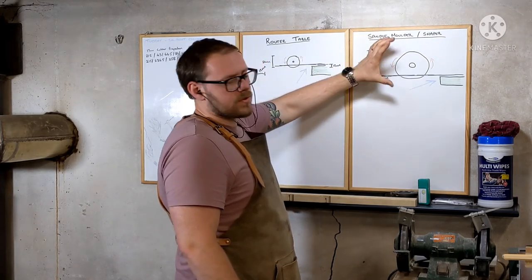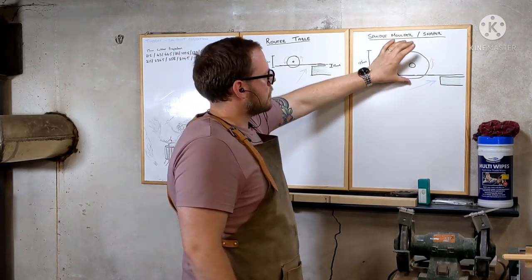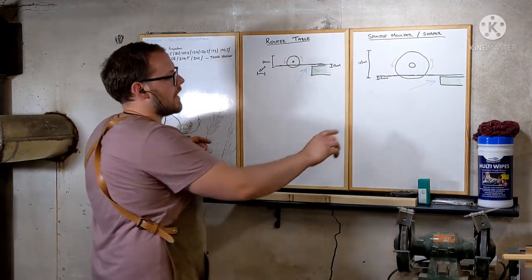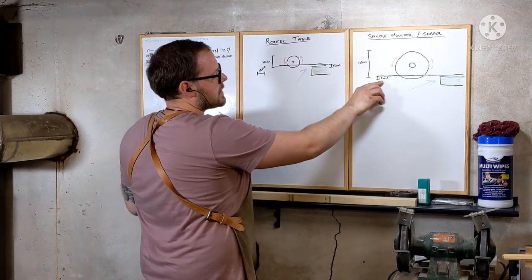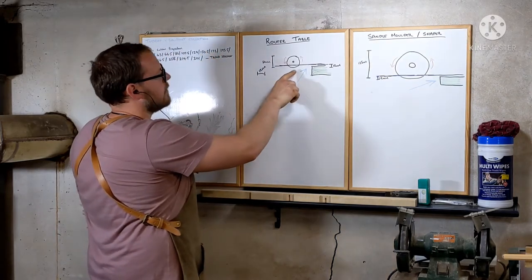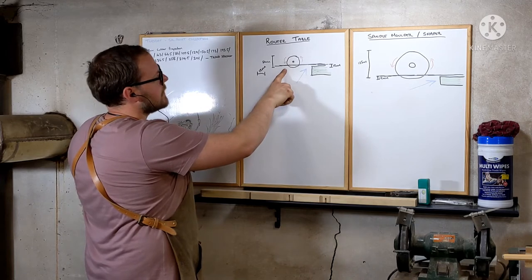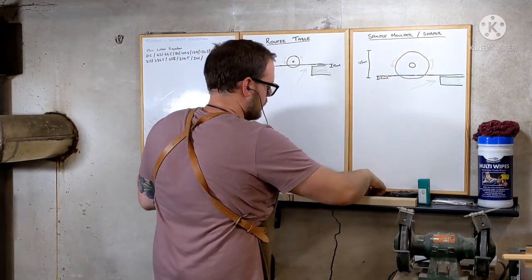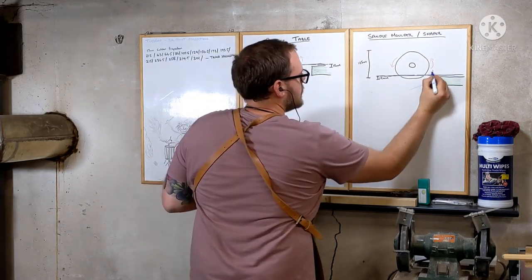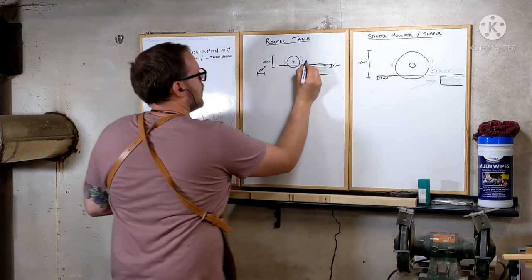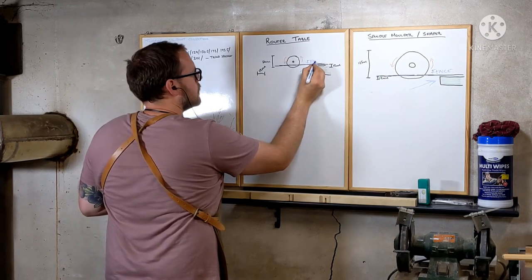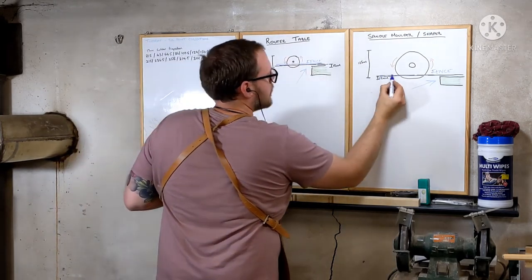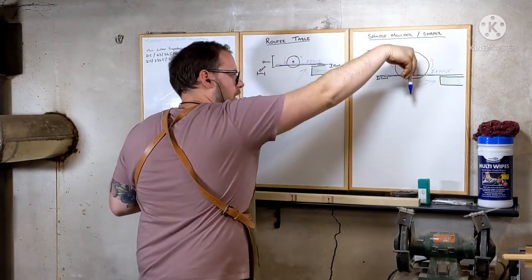Looking down on the spindle molder we've got a similar cutter, same profile, but it's about five inches across, 125mm across. The big difference with both of these when you're feeding the timber into them is the actual depth that the cutter is set is going to be the same - in this case let's say 12mm, a cutter profile of 12mm. Both of these cutters are projecting past this fence. This part here is the fence going through both.